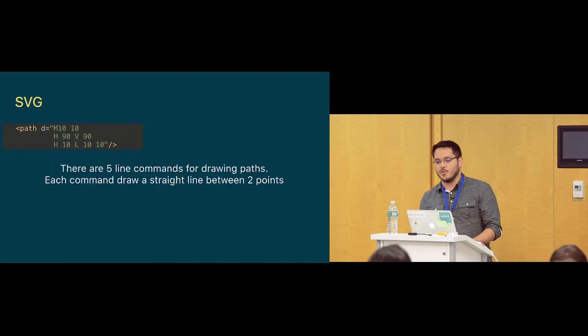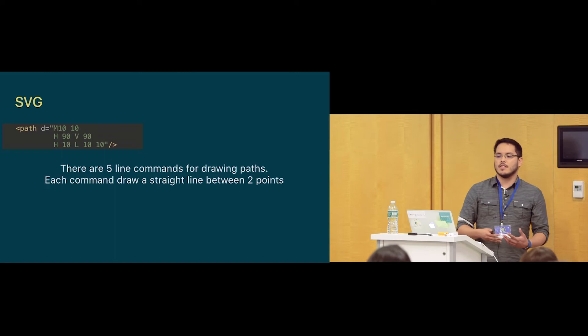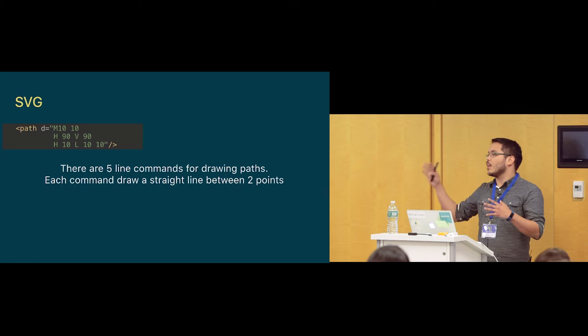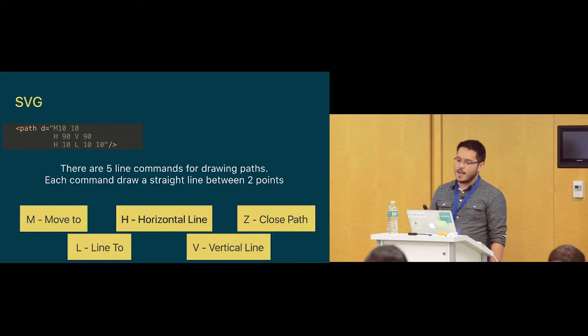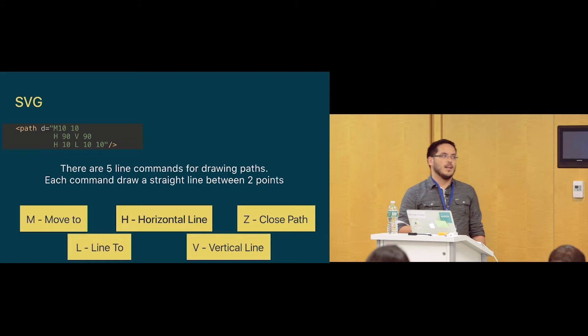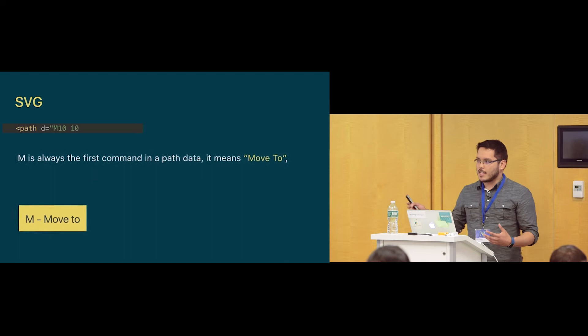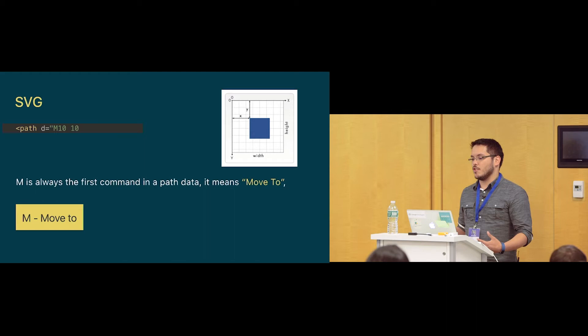So how does SVG draw? There are five line commands — the basic ones — and each command draws a straight line between two points. Basically there is an invisible cursor that goes through x and y locations to draw lines, circles, and all that. The five commands are: move to, horizontal line, close path, line to, and vertical line. The move-to command tells the drawable where to start drawing — you give it an x and y position, and that's where everything starts.